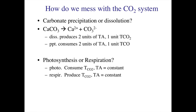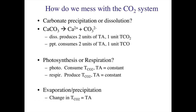Photosynthesis consumes total CO2 but doesn't change the alkalinity. Respiration produces carbon dioxide but doesn't change total alkalinity. Evaporation concentrates the water, so total CO2 goes up and so does alkalinity, but they go up equally. Conversely, precipitation dilutes the system, and total CO2 and total alkalinity both go down equally.